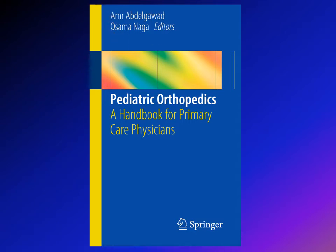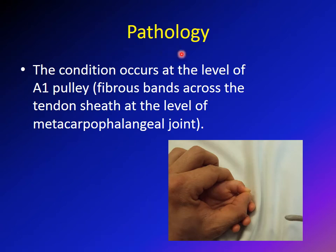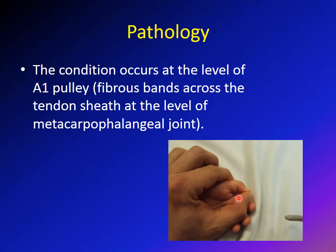As you can see in this picture, this is a child with congenital trigger thumb. He has a flexion deformity of the interphalangeal joint of the thumb. However, the pathology is actually at the level of the metacarpophalangeal joint. At that level there is the A1 pulley — a fibrous band that goes across the tendon sheath of the flexor pollicis longus. There is a mismatch between the size of the tendon and the A1 pulley.